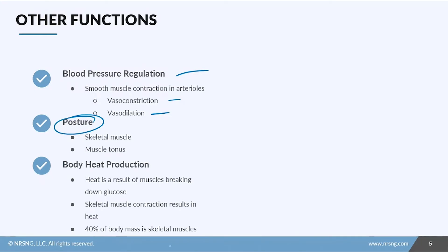The other thing that muscles do is they're responsible for body heat production. When muscles break down glucose, heat is given off. Since 40% of our body mass is skeletal muscle, as we contract throughout the day, we generate heat.